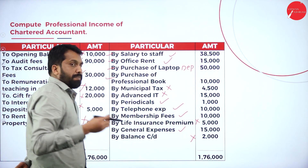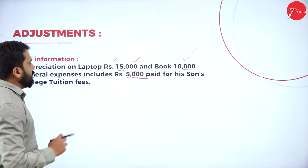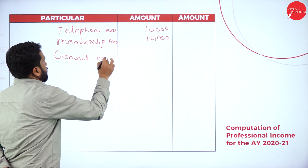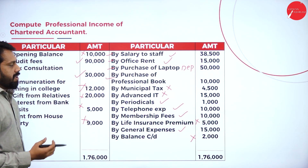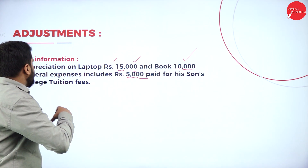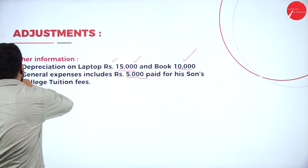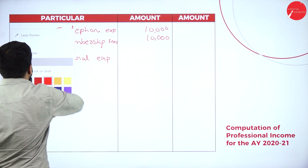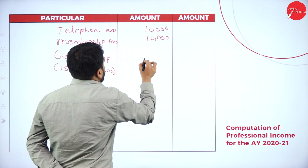Life insurance — it is personal, we will not consider it. General expenses: it is 15,000. However, we have an adjustment — general expenses include 5,000 paid for son's college tuition fees, which is personal, so we remove 5,000. General expenses = 15,000 minus 5,000 = 10,000.